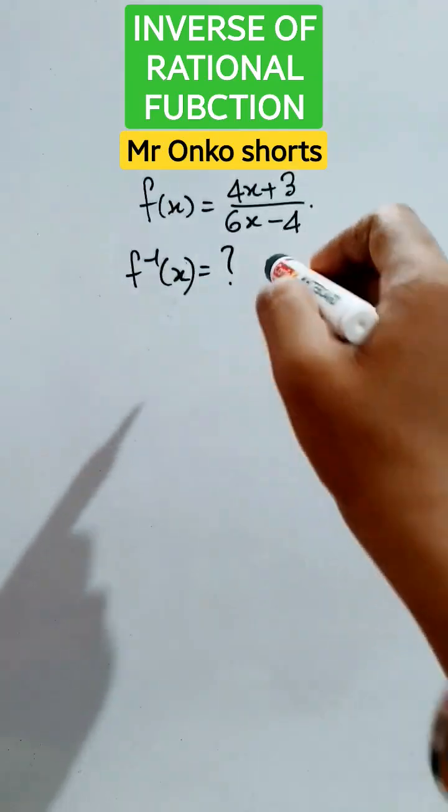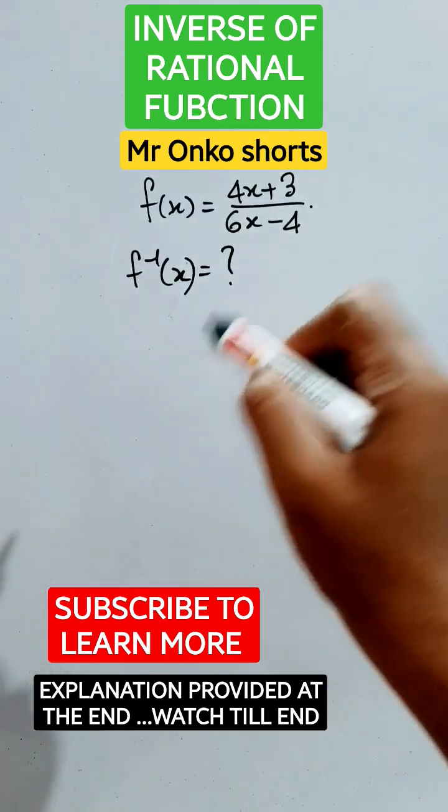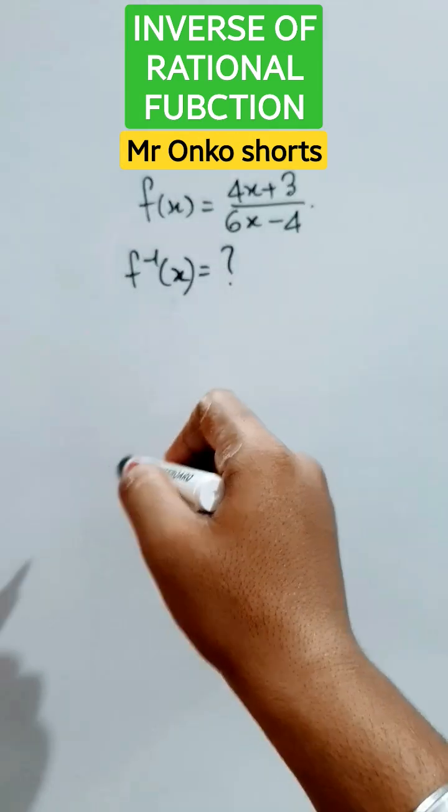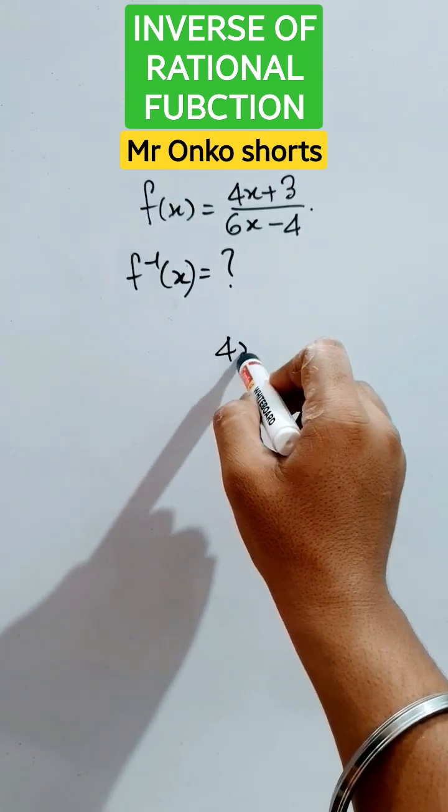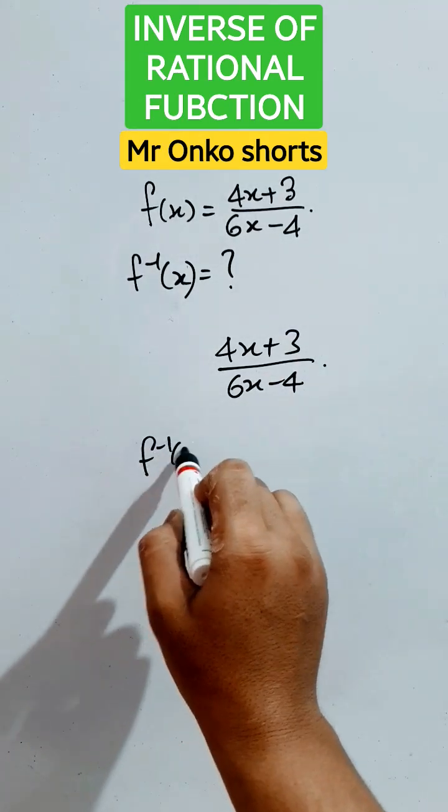Hello guys, welcome to Mr. Rongo Shorts. Today we are given a rational function and we have to find the inverse of the given function. As we have earlier mentioned, the shortcut process we will just revise that. We have to write down the given rational function first of all. Now we have to find the inverse.